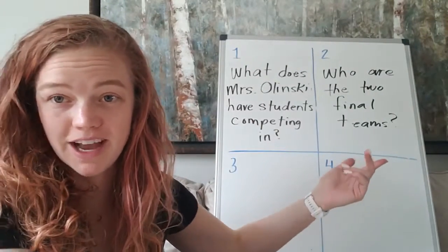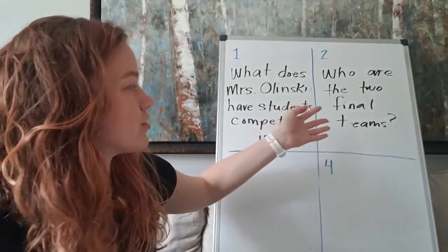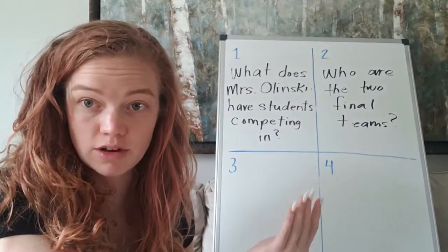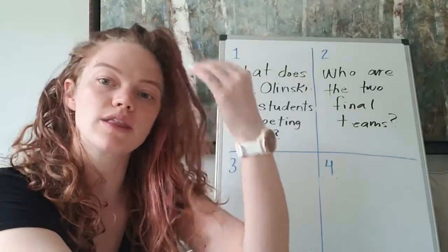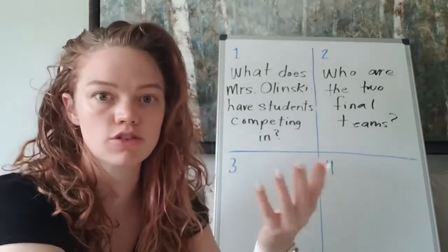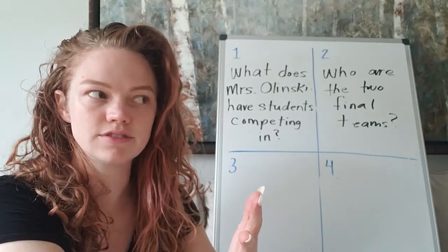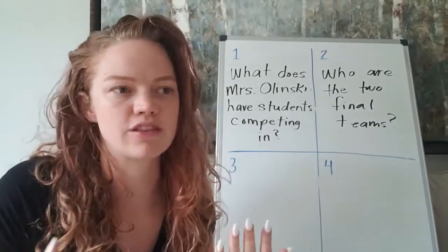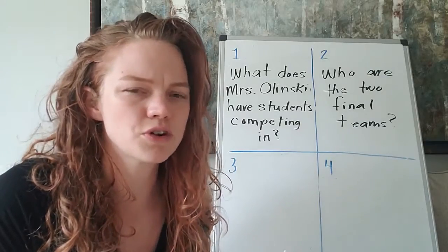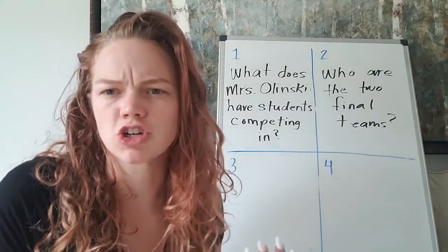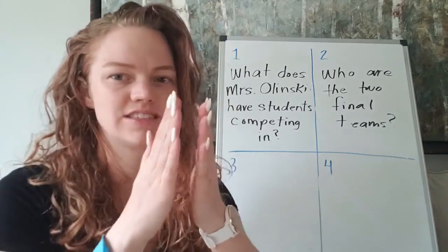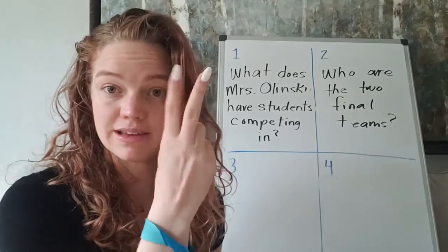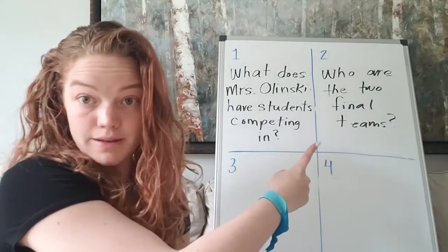All right, so my next question — who are the two final teams? Mrs. Olinski has a team, we know they're a team of sixth graders. They contrast them with most of the other competitors, which are eighth graders, and they kind of show you this distinct difference. Sixth graders are kind of fresh into middle school, these eighth graders are older, they're trying to act more mature, they're trying to dress more mature, and there's just a distinct divide. So we have Mrs. Olinski's team, and we have the team that they're up against — who are those two final teams? What are their names?